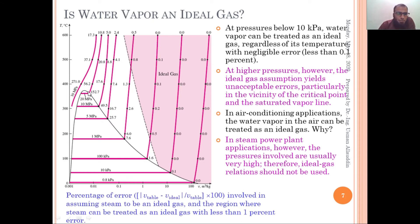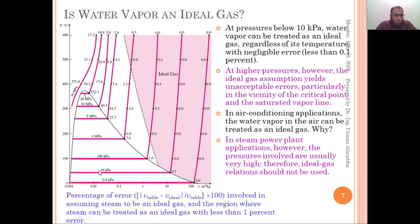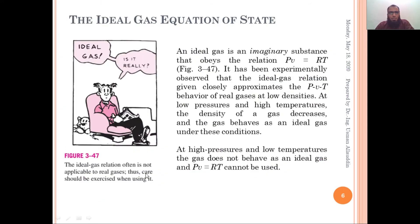But at high pressures, especially near the critical region, the errors are 56.2%, 152.7%, 49.5% — water vapor cannot be treated as an ideal gas there. So water vapor can be assumed ideal only at pressures below 10 kPa. In air conditioning applications where pressures are very low, you can assume water vapor behaves as an ideal gas. But in steam power plants where pressure is very high, you must use steam tables — not the ideal gas equation.